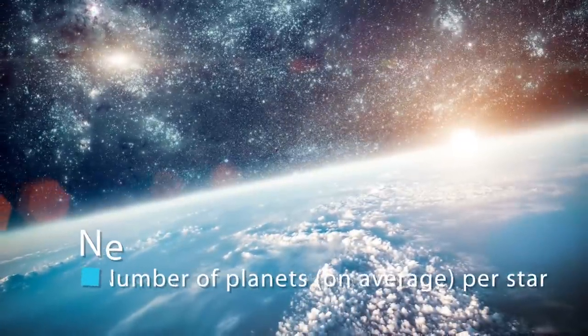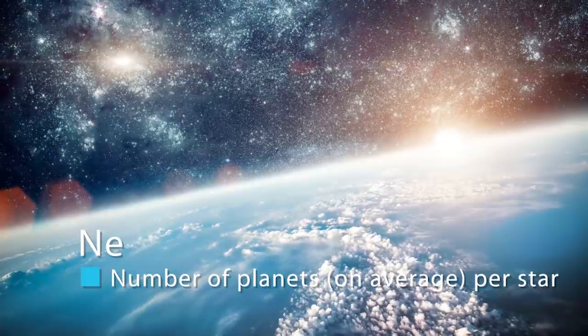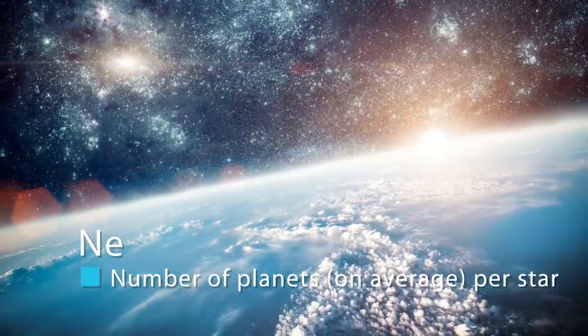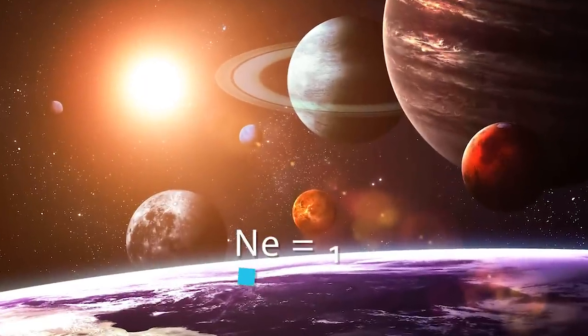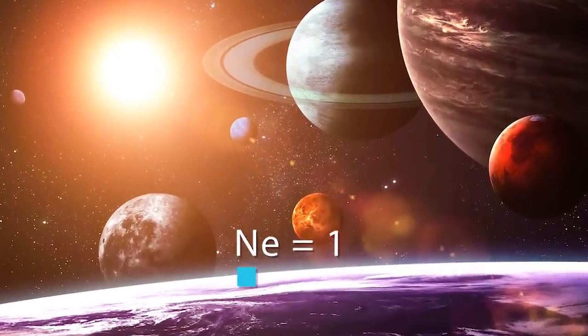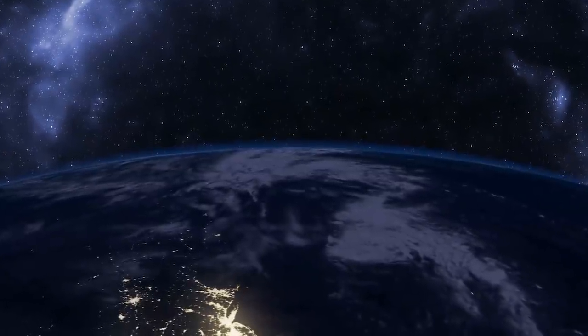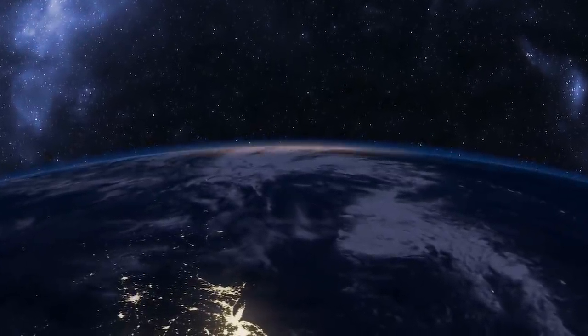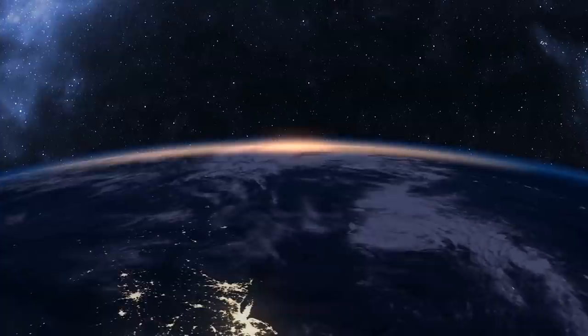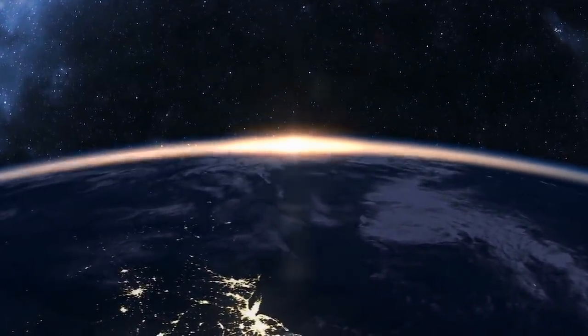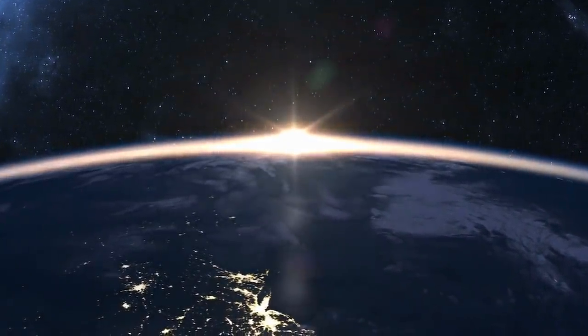nE is the number of planets, on average, per star where the conditions are just right to support life. For instance, we know that in our solar system, nE equals 1 because we have only one planet with life. Now you should start to become familiar with the process. Every parameter in the formula raises a question that leads to the following one. So what about the next one?